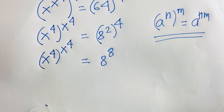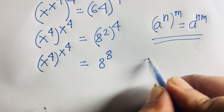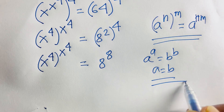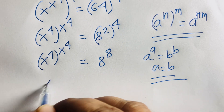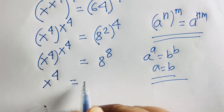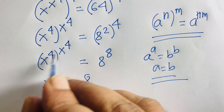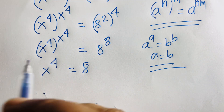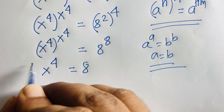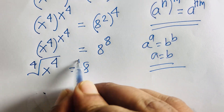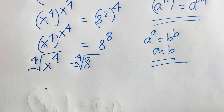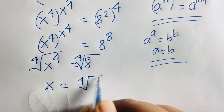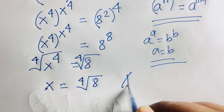Then we know that a to the power a is equal to b to the power b, so here a is equal to b. According to these rules, I can say easily here is x to the power 4 is equal to 8. Here the base is the same and the exponents are the same. Then if I use both side 4th root, I can say easily here is x is equal to the 4th root of 8. So this is our final answer.